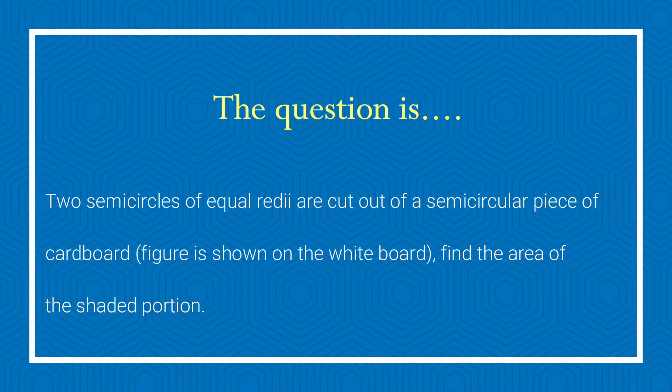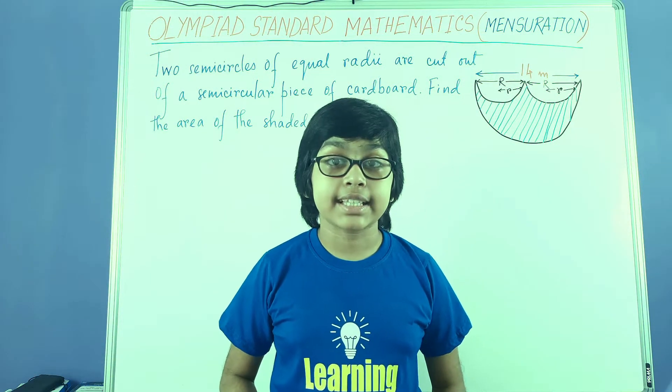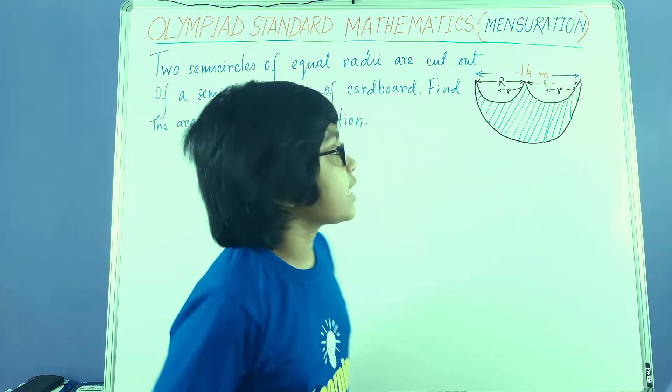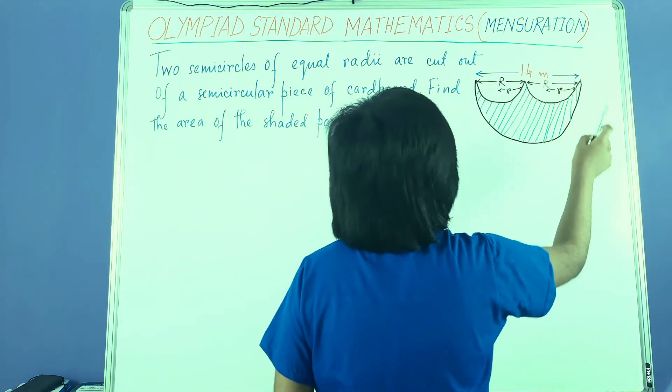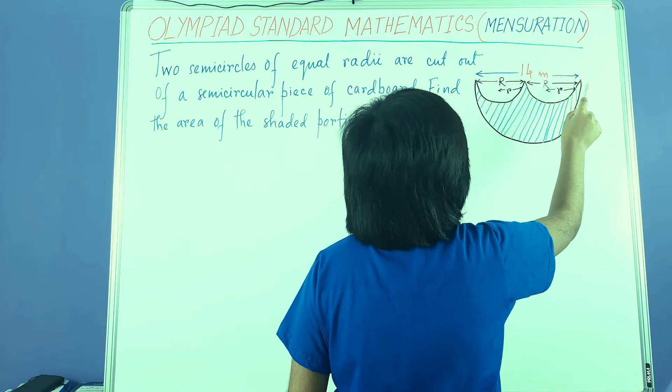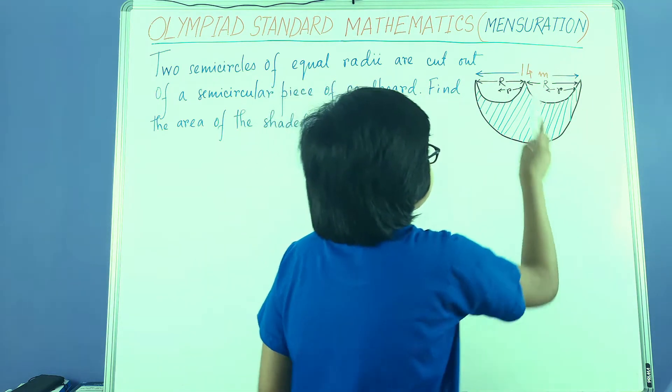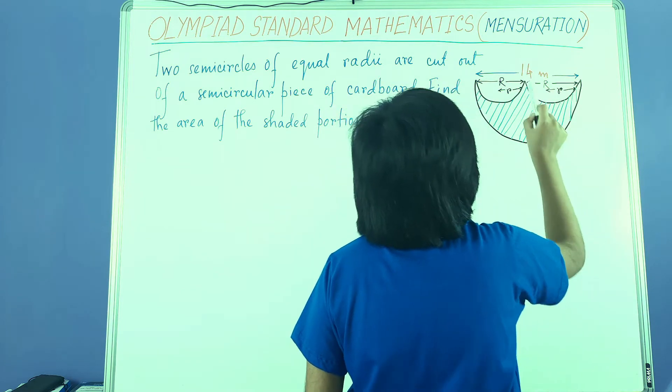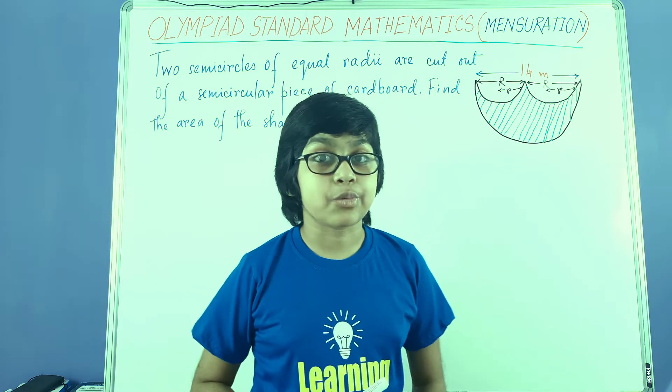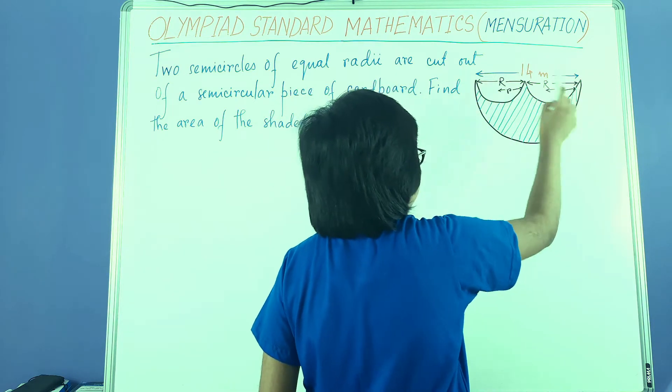I'm going to write this down. Okay, first things, let's understand this diagram very well. This is a semicircle which has a cardboard piece, and it's 14 meters of diameter. Capital R represents the radius of the semicircle, and here small r represents the radius of the semicircles that were cut out of the semicircle.